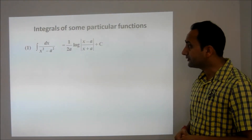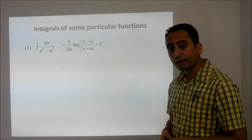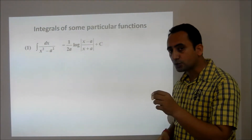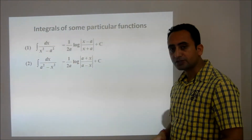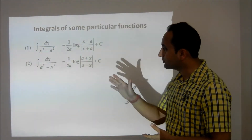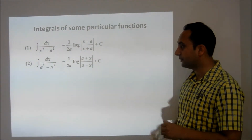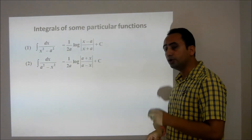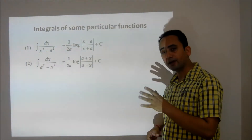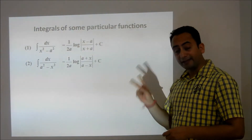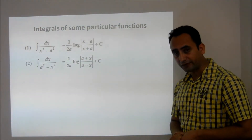Similarly, if we have the integral of 1 upon a squared minus x squared, it is proved in exactly the same way. The result is: integral of 1 upon a squared minus x squared dx equals 1 upon 2a times log of a plus x upon a minus x, plus a constant. These are the first two particular integrals.